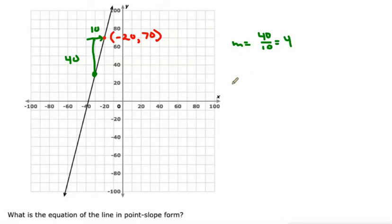So our equation will be y minus the y value of 70 equals 4, that's our slope, times x minus the x value of negative 20. And the only thing is, I don't want to leave this minus a negative 20. So let's fix that. Let's make it y minus 70 equals 4 times x plus 20.